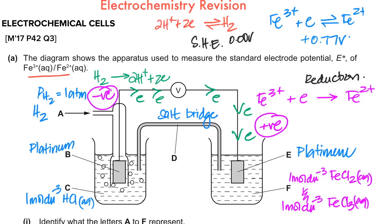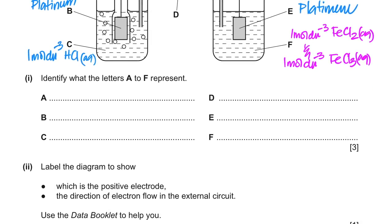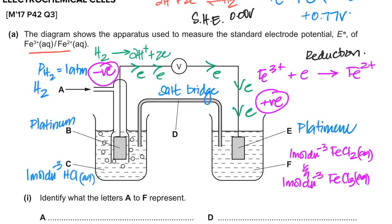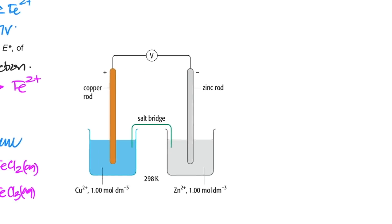The electrode going forward is positive because it's the one gaining electrons. The one shifting backwards loses electrons and is therefore negative, since electrons go from negative to positive — from the one losing electrons to the one gaining electrons. In this cell, the positive electrode is iron and electrons travel from the hydrogen electrode to the iron electrode.